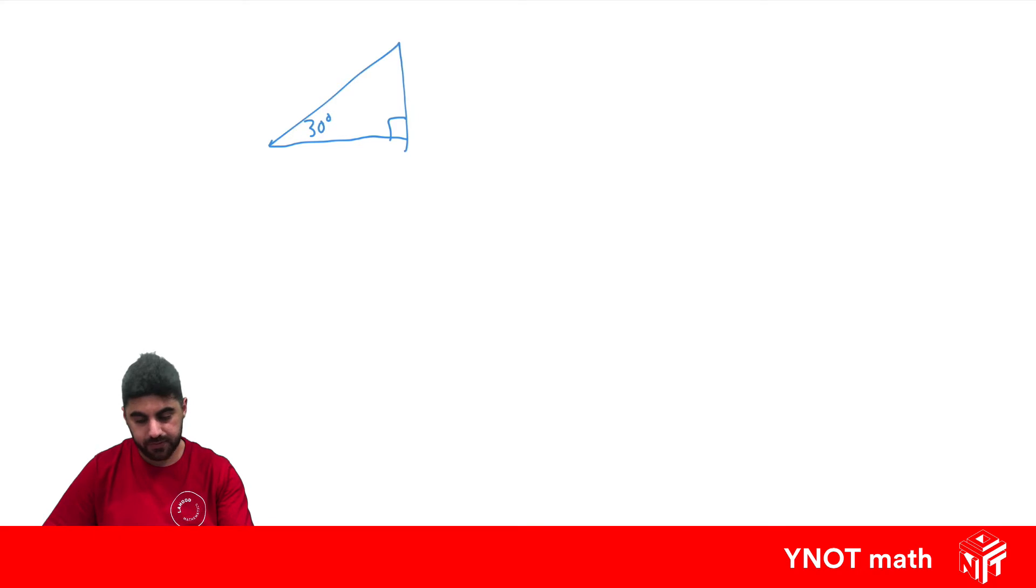We have 30 degrees, x and 3. So using our trig knowledge we can actually find the length of this side because we have one angle and one side.